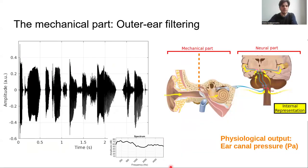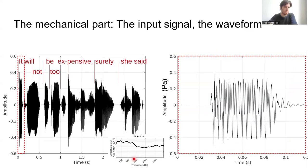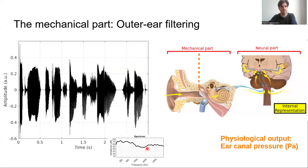I will start with the outer ear filtering. The outer ear is composed by the pinna and the auditory canal ending at the tympanic membrane. As you can see here, this acts as a kind of tube that would resonate at some specific frequency. If we now focus on the spectrogram and the waveform and compare it with the input waveform, you can see that there is some emphasis at the region of about 3 kHz. In the most simplistic way, the outer ear filtering can be approximated as a filter with emphasis in that region.